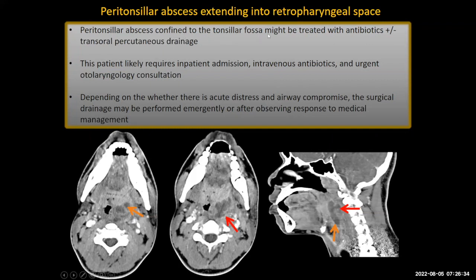This is a peritonsillar abscess extending into the retropharyngeal space. Peritonsillar abscesses confined to the tonsillar fossa might be treated with just antibiotics if they're small, plus or minus transoral percutaneous drainage by the emergency physician. This patient likely requires inpatient admission, intravenous antibiotics, and an urgent otolaryngology consultation. Even if they're not going to drain this portion, it's good for this patient to be seen by a surgeon to be involved in management in case it's necessary.